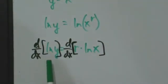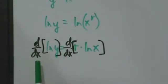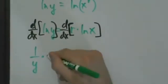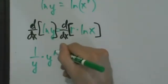So now d/dx of natural log of y, we're just going to think chain rule here. Derivative of natural log of a thing is 1 over that thing times the derivative of that thing.